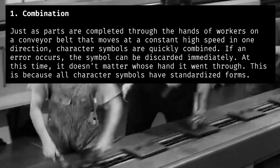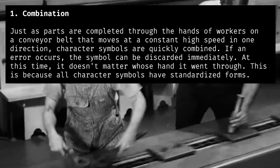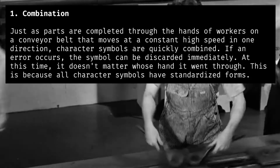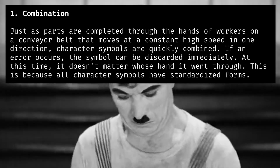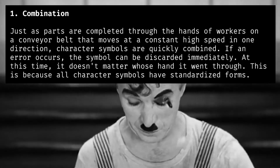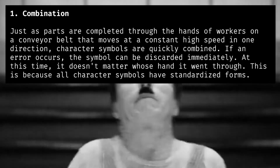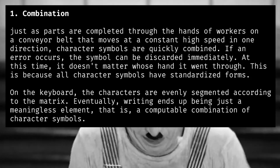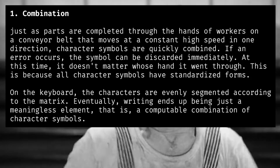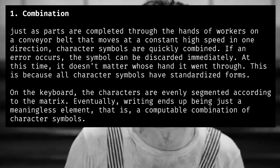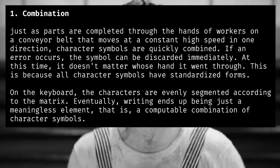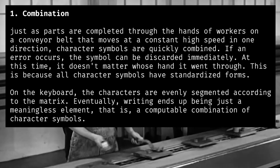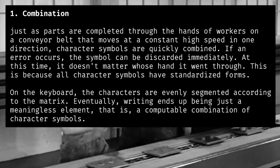If an error occurs, the symbol can be discarded immediately. At this time, it doesn't matter whose hand it went through, because all character symbols have standardized forms. On the keyboard, the characters are evenly segmented according to the matrix. Eventually, writing ends up being just a meaningless element — a computable combination of character symbols.